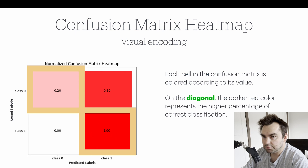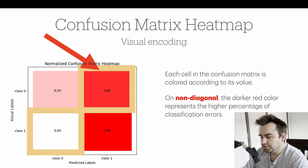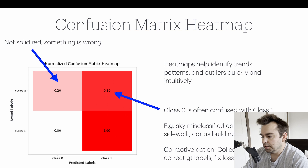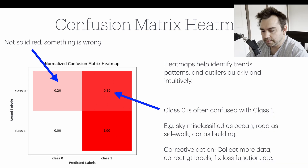On the diagonal of the matrix, the darker the red color, the better — darker red meaning more correct classification. A darkest red of one means all instances of that class were correctly classified. On the non-diagonal, the darker the color, the more errors there are. For example, actual label class zero and predicted label class one showing 80% means 80% of class zero instances were misclassified as class one. This heatmap visualization allows us to quickly identify issues.